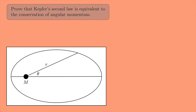Kepler's second law says that if you have a planet orbiting around the Sun — the big M here is the Sun and our planet is over here — the line connecting the Sun and the planet sweeps out equal areas in equal times. So if I call that area A, then what this is really saying is that dA/dt, the rate the area is being swept out, must be a constant.